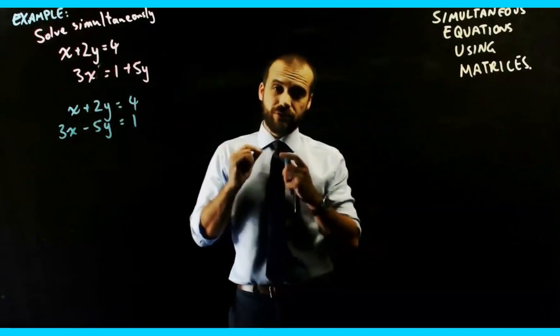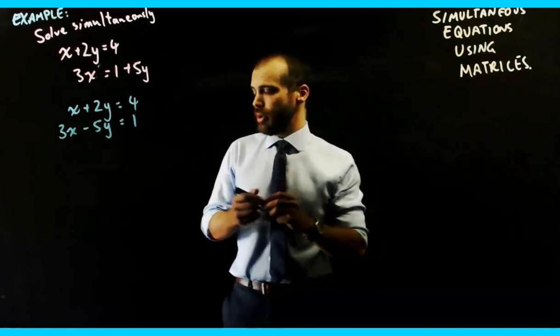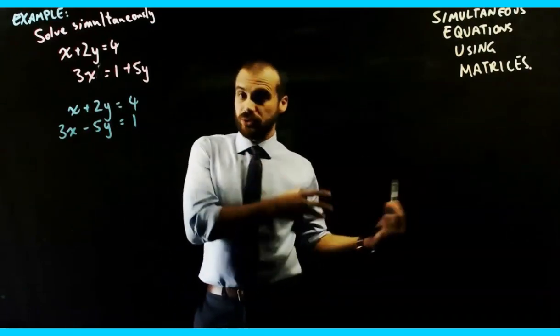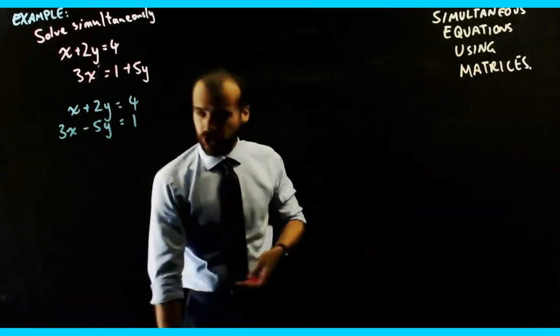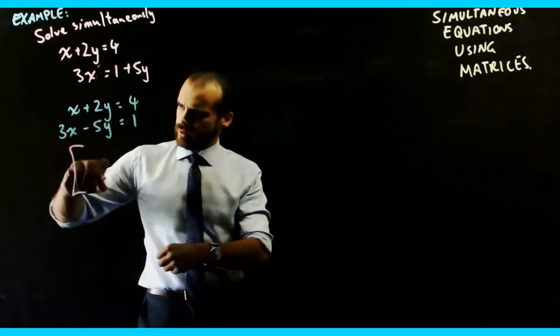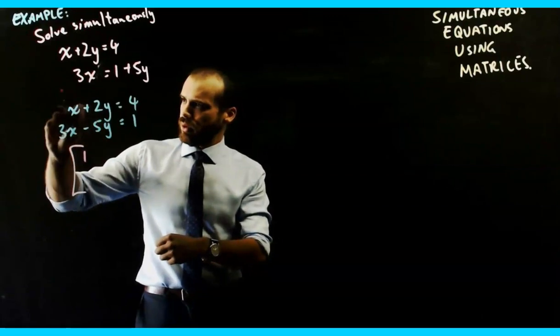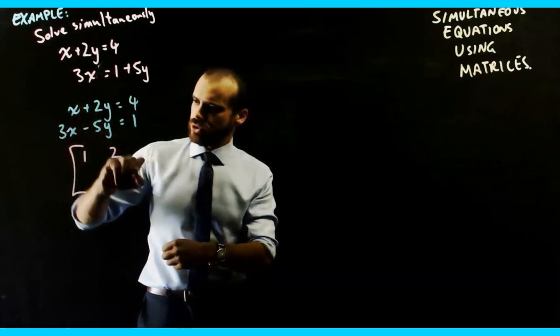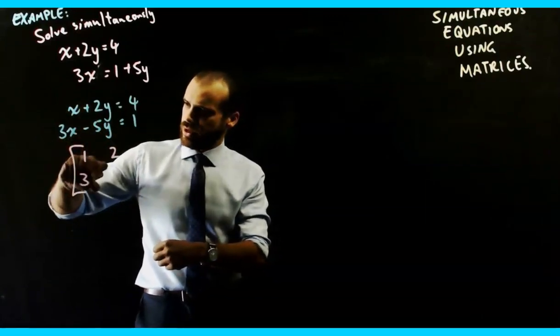Now that we've got them in that form, we can rewrite them as a matrix by doing a matrix multiplication in the following way. So 1x, 2y, 3x, negative 5,